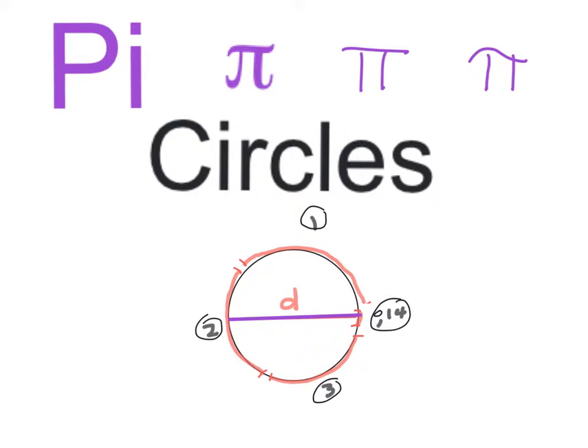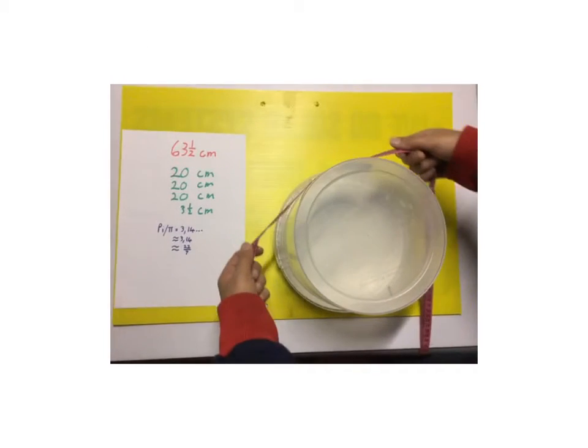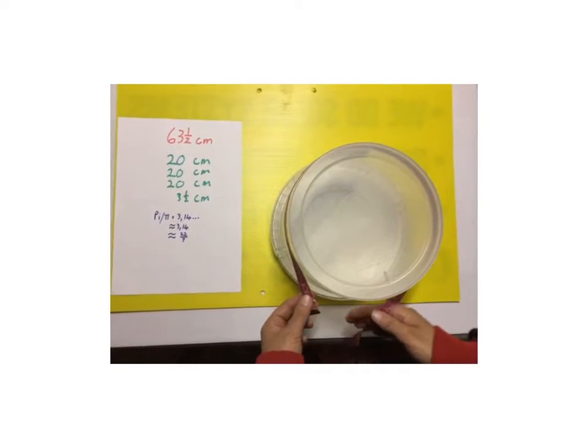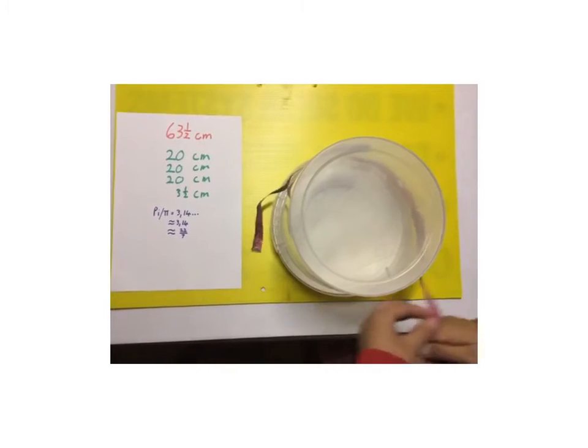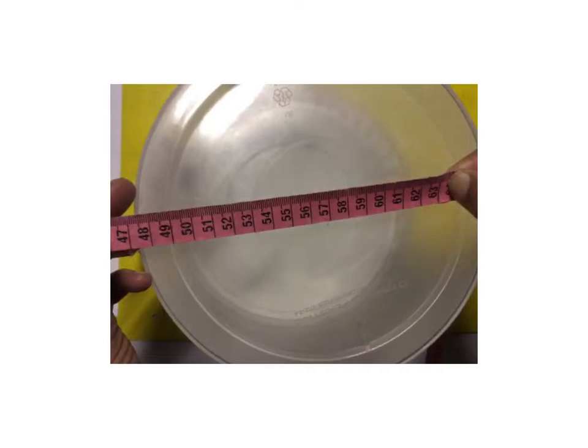So let us look at the real life situation. You now take any round container and with a measuring tape measure the length of the circumference. You'll see in this case it is 63 and a half centimeters.